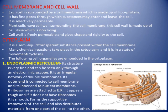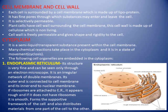Cytoplasm is the semi-liquid, transparent substance present within the cell membrane. Many chemical reactions — all the metabolic reactions — take place in the cytoplasm. It is in a state of continuous movement called streaming movement, and that streaming movement of cytoplasm is known as cyclosis.